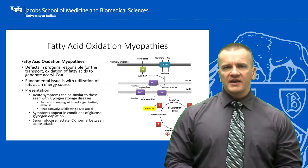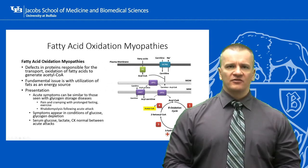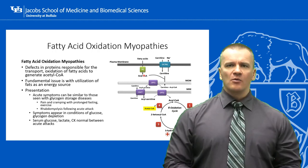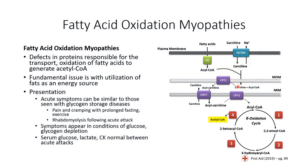To recap from the first segment, fatty acids transported to the muscle cells, or stored within the cells, are mobilized and transported into the mitochondria for oxidation into acetyl-CoA through beta-oxidation. Transport through the inner mitochondrial membrane requires the carnitine shuttle system and activity of the carnitine acyl transferase enzymes.